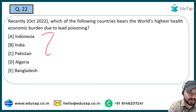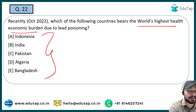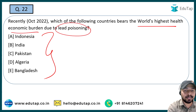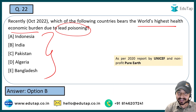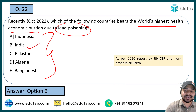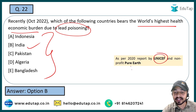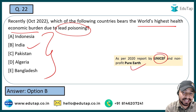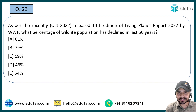The next question: which country bears the world's highest health economic burden due to lead poisoning? The right answer is Option B — India. As per a 2020 report by UNICEF and the nonprofit Pure Earth, India is basically bearing the world's highest health economic burden due to lead poisoning.